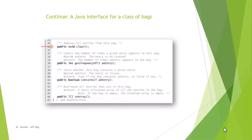Moving forward, the clear method removes all entries from the bag. Next is the getFrequencyOf method, which counts the number of times a given entry appears in the bag and returns that count. The boolean contains method tests whether the bag contains a given entry, returning true if it does and false if not. The last method, toArray, retrieves all entries in the bag, and if the bag is empty, the returned array will be empty.